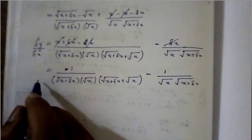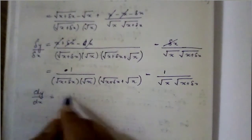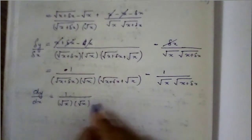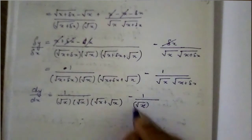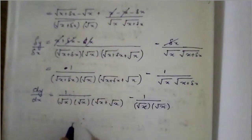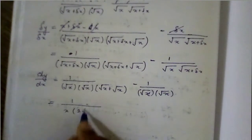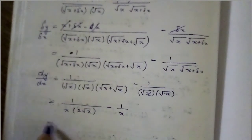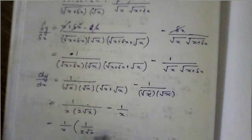Now taking the limits on both sides as del x tends to 0, dy by dx equals 1 by root x into root x into [root x plus root x] minus 1 by root x into root x, which is 1 by x into 2 root x minus 1 by x. Taking 1 by x as a common factor, we get 1 by x into (1 by 2 root x minus 1). This is the derivative of the function.